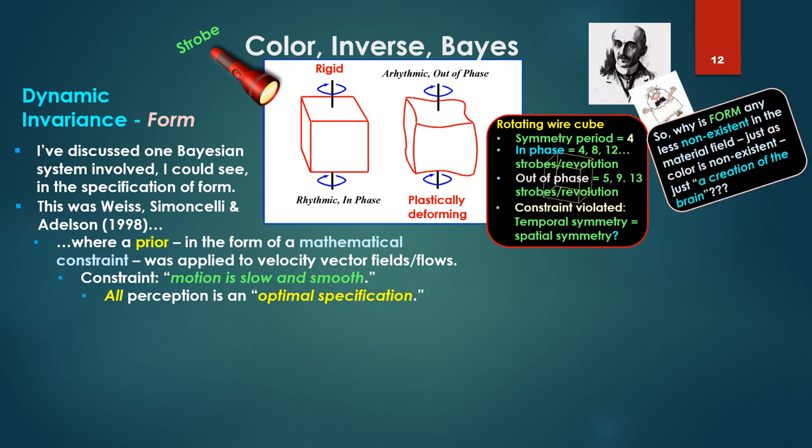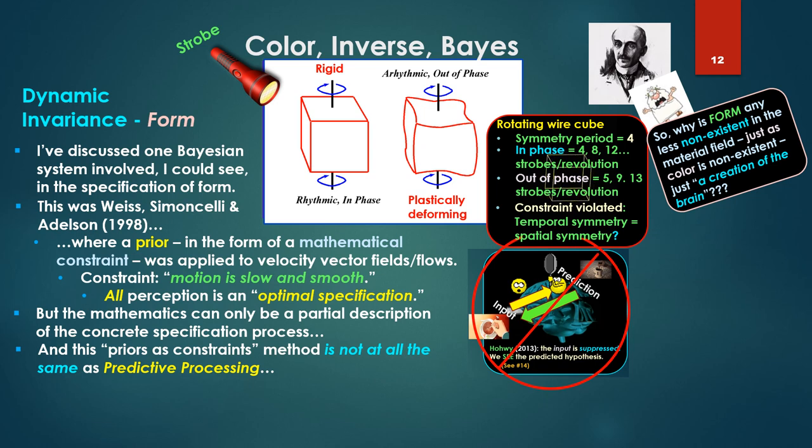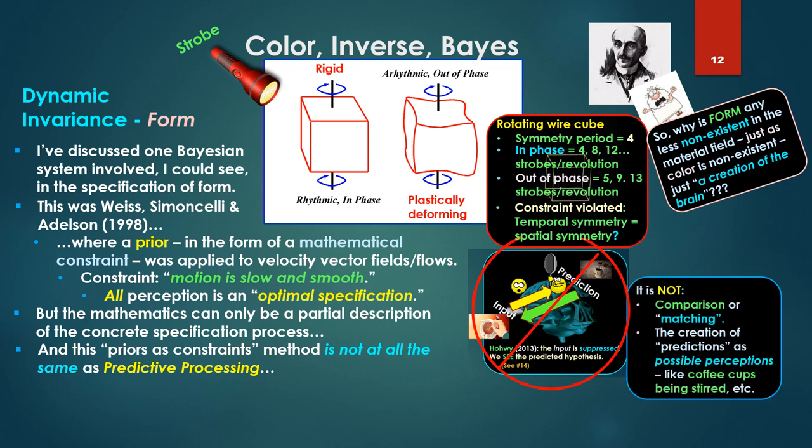One would wonder then, why is form any less non-existent in the material field, just as color is non-existent, just the creation of the brain? Logically you're forced to this. All these qualities, all of these things become creations of the mind, of the brain. But the mathematics in the Bayesian case we're describing there with Weiss, Simoncelli and Adelson can only be a partial description of the concrete specification process. And this priors as constraints method is not at all the same as predictive processing.